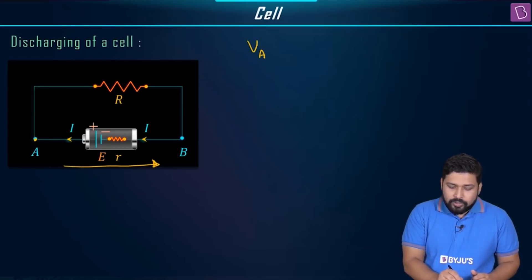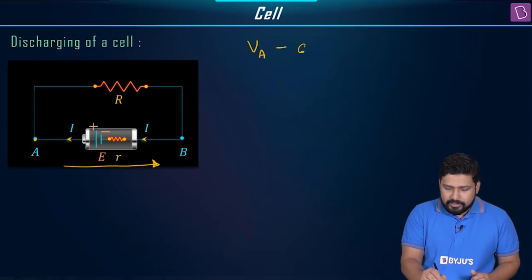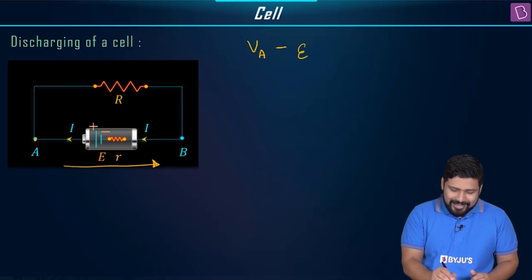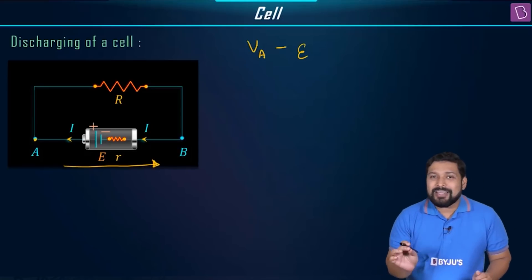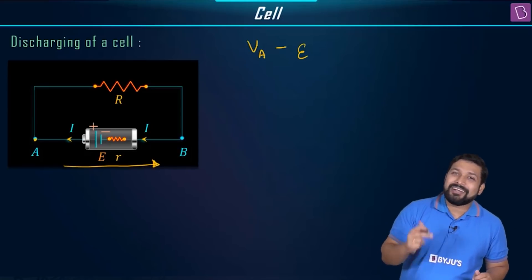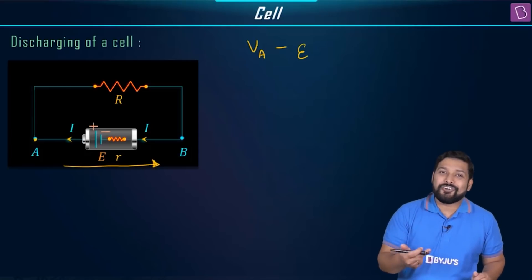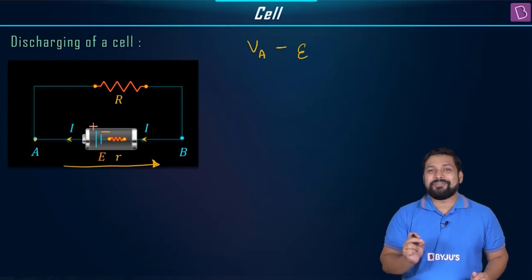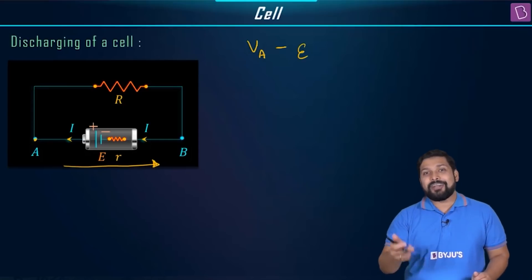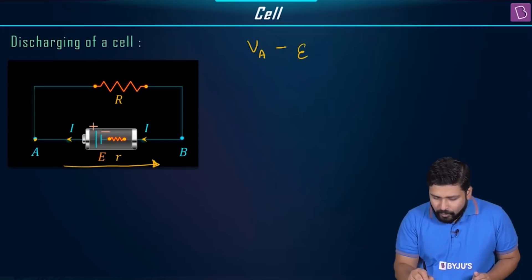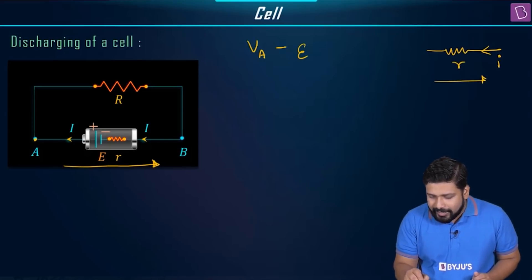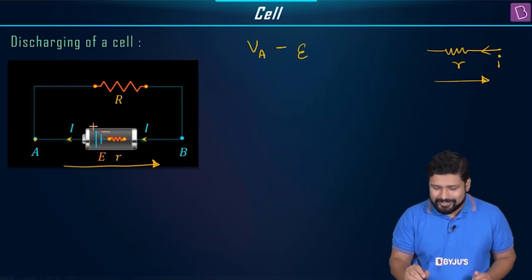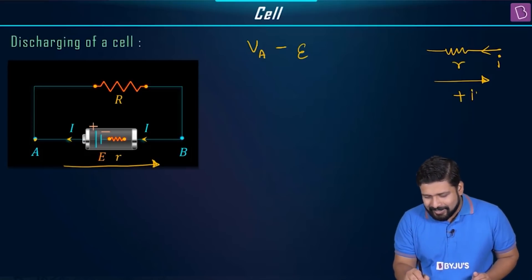As I move ahead, I encounter which terminal of the battery? It is positive. For a resistor, we look at the direction of motion and the direction of current. If they are in the same direction, we use a negative sign; if opposite, we use a positive sign.